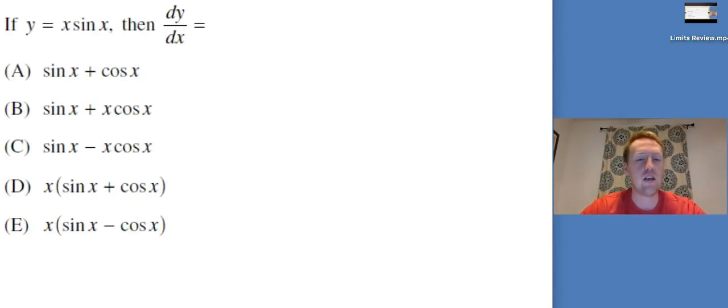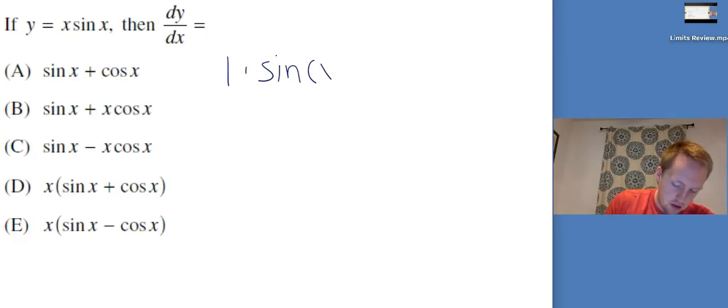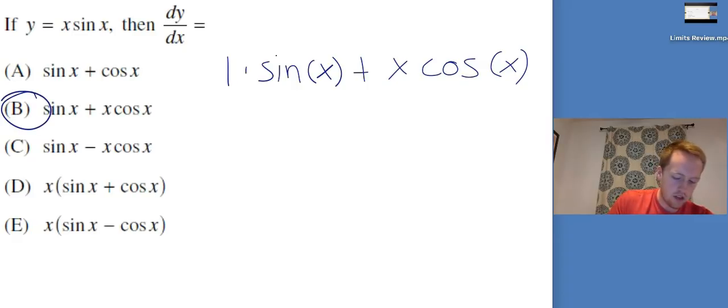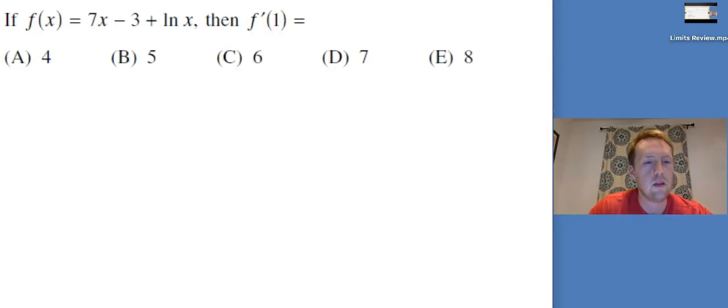If Y equals X sine of X, then DYDX equals dot, dot, dot. I've got a function times a function here. I see X times sine of X. I have to use product rule. So the derivative of the first is 1 times sine of X plus X. The derivative of sine is cosine of X. So sine of X plus X cosine of X, that looks like B. Perfect.